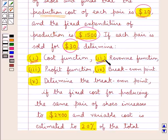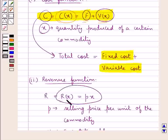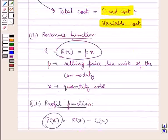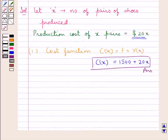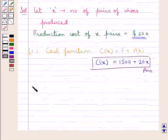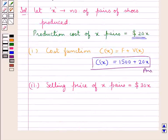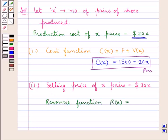In the next part we find the revenue function. We know that R(x) = P × x, where P is the selling price per unit and x is the quantity sold. The selling price of each pair is $30, so the selling price of x pairs is $30x. Therefore, the revenue function R(x) = 30x, that is the number of commodities sold multiplied by the selling price of each commodity.